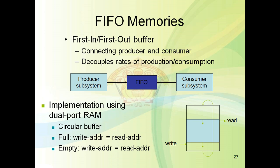The most common way to build a FIFO is to use dual port memory in a circular buffer form. One port accepts data from the source (write port), and another port reads data and provides it to the processing subsystem (read port). Both ports operate on the same shared memory in circular buffer form.